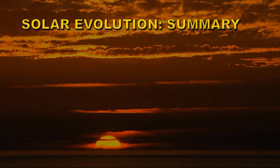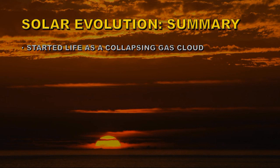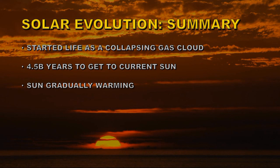So let's see what we've learned about the evolution of the sun. The sun started life as a collapsing gas cloud. It's taken 4.5 billion years to get to the current state of the sun. The sun has been gradually warming for about the last 3 or 4 billion years and will continue to do so.